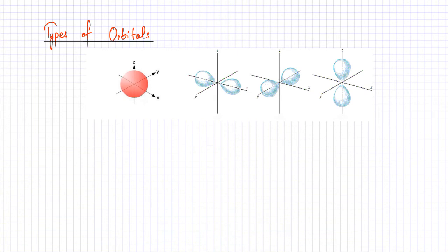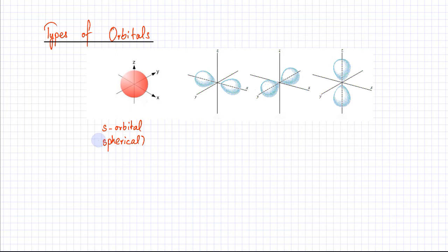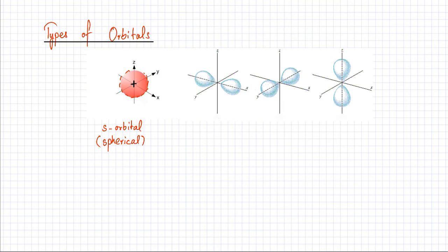Now I'm going to discuss the types of orbitals in atoms. The first orbital is called an s orbital. An s orbital is a spherical region — the shape is spherical around the nucleus. The central part is where the nucleus is, so let's put a positive sign there. If an electron is present in an s orbital, it would be somewhere in this spherical region, moving very fast.